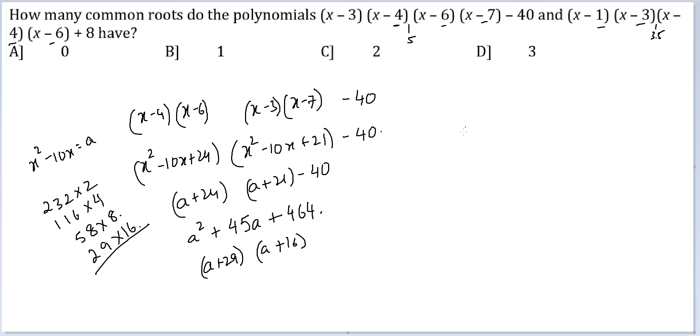So I get (a + 29) or (a + 16) should be equal to this expression. So effectively what we have got is a was x square minus 10x plus 29 and x square minus 10x plus 16.